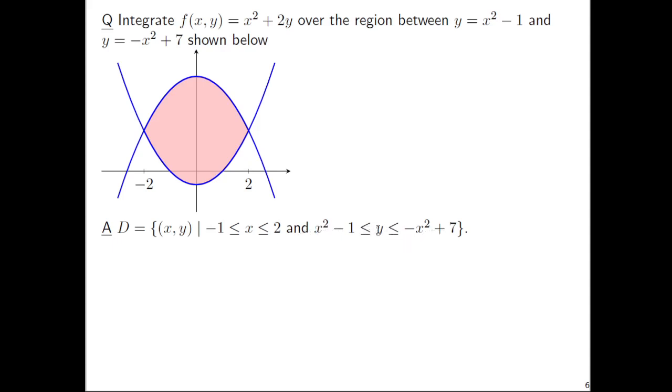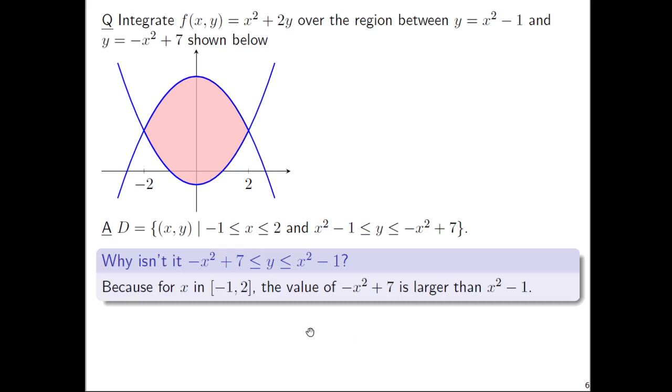Notice the thing is that x squared minus one, this parabola this way, is the one that's underneath for this shaded region.